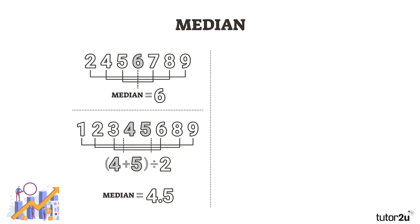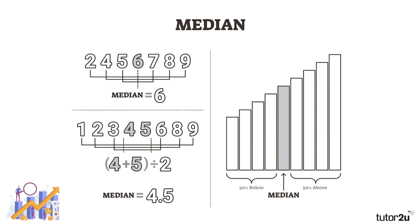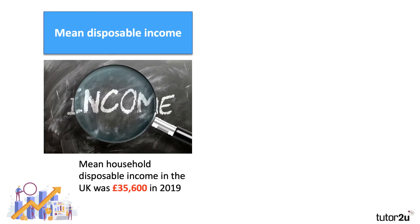In the top left example, the median would be six — with three values either side. Sometimes you have a split, so the median would be four plus five divided by two, giving four point five. That's the second example. Crucially, the median is that middle value in an income distribution: 50% below and 50% above.